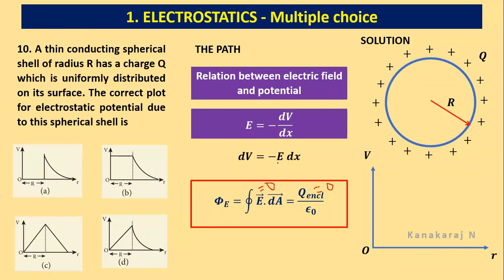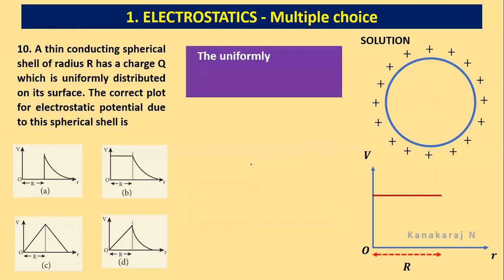So when the electric field becomes 0, the right hand side minus E dx becomes 0, thereby the dV becomes 0. What is the meaning of dV? The change in potential is 0. That means there is no change in potential. So we can say that V is constant within the shell, that is up to small r equals capital R. Let us look at the graph. Up to capital R, we have the potential remains same.